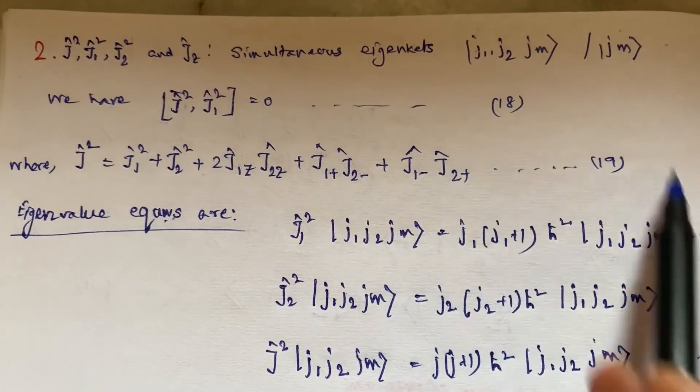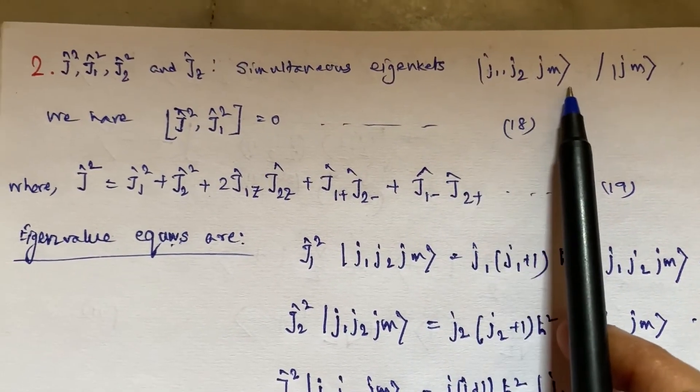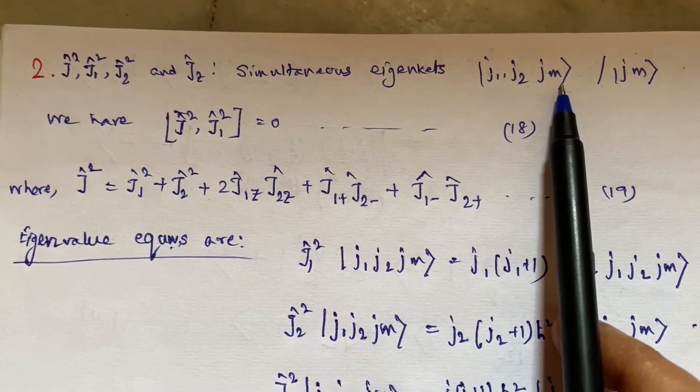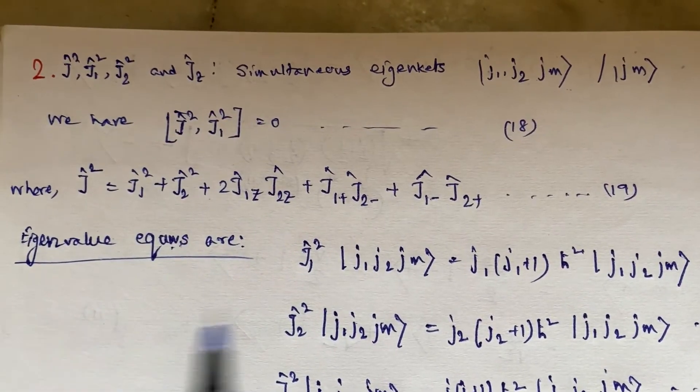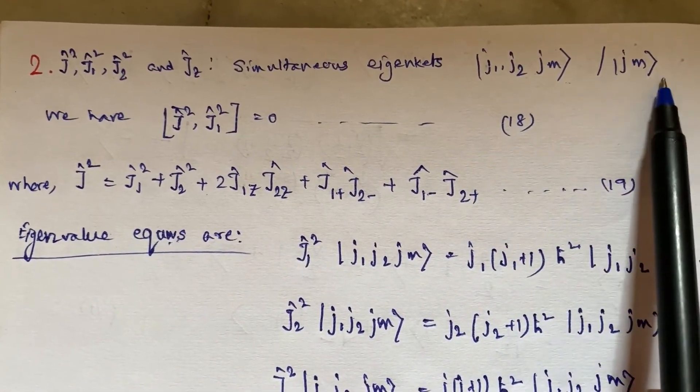This is my second option, which tells us that this basis is made of the quantum numbers associated with these operators. Sometimes j₁ and j₂ are understood and we are left with |j, m⟩ only.